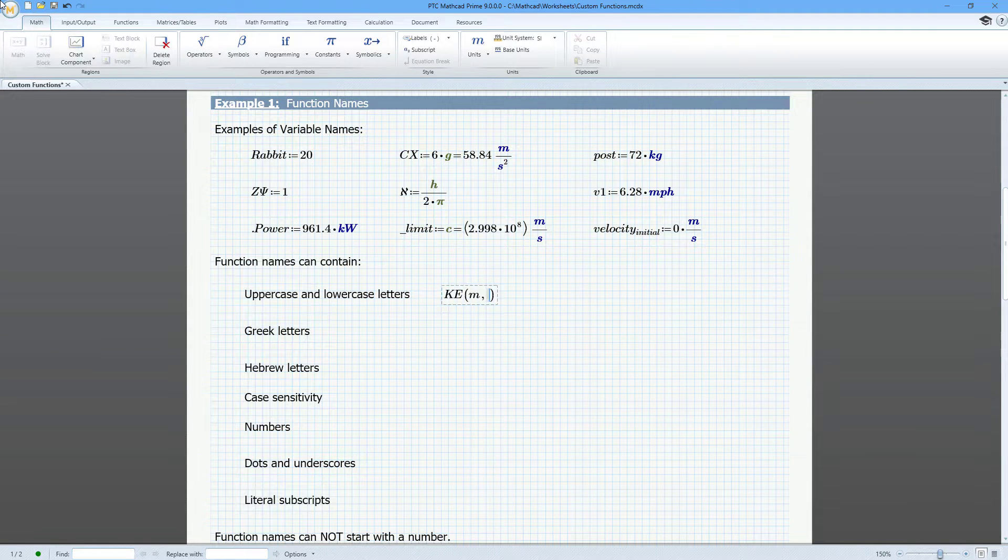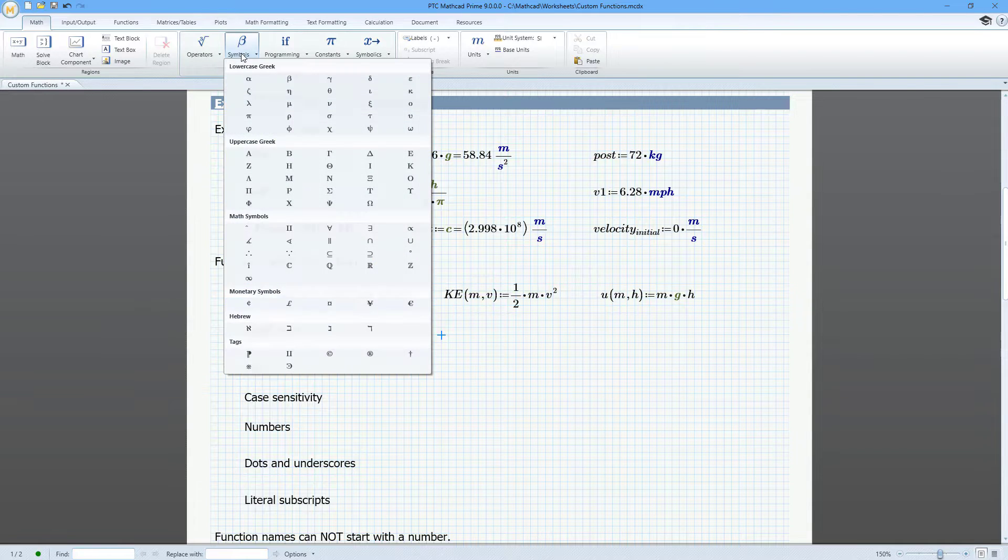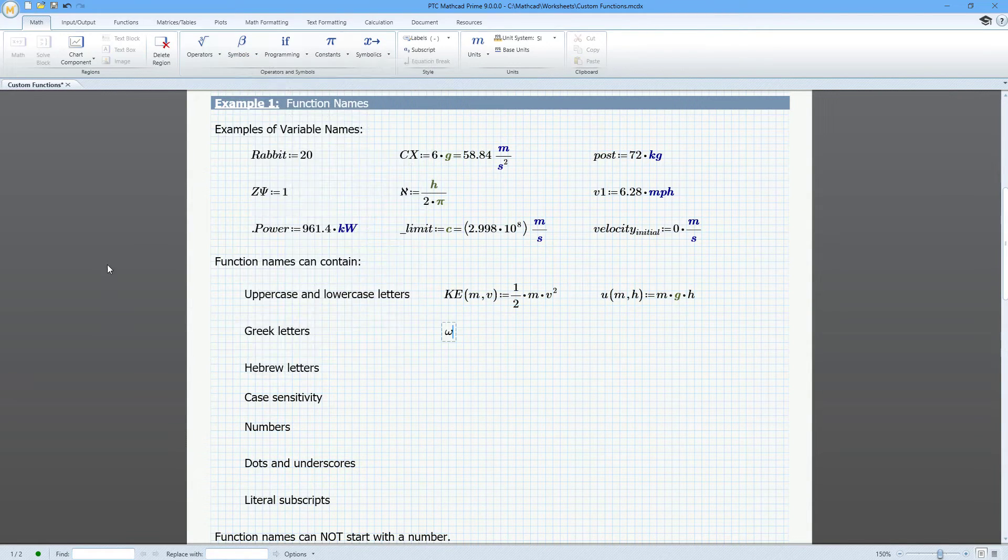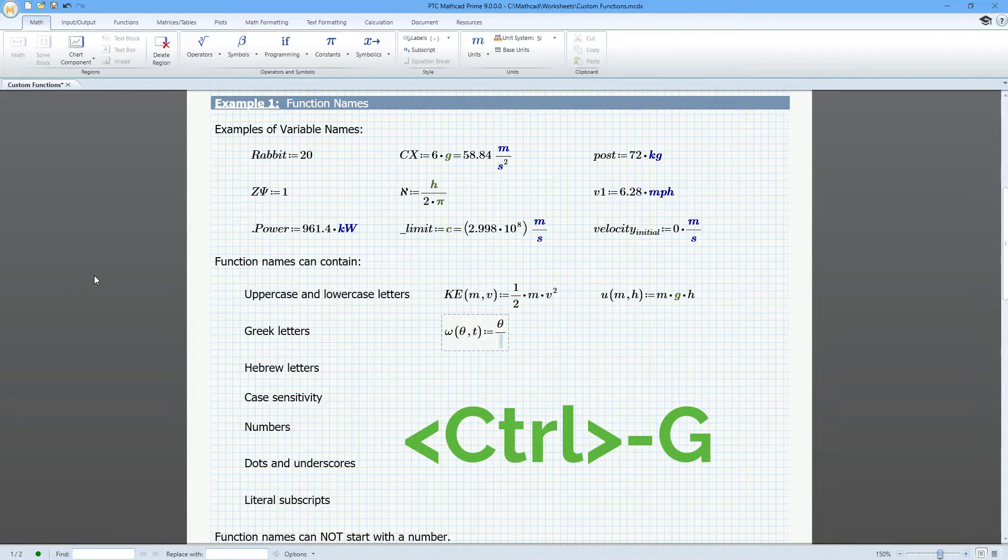A function name can contain upper and lowercase letters. You can use English and Greek letters. You can insert Greek letters from the Symbols drop-down menu. You can convert English letters to their Greek equivalent with the keyboard shortcut Ctrl-G.